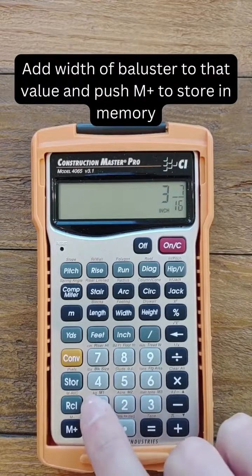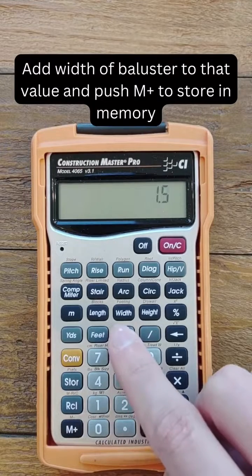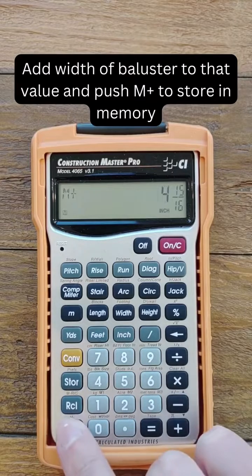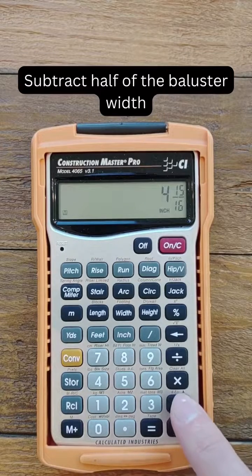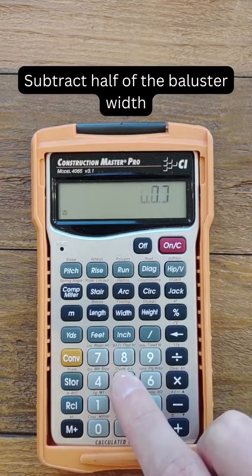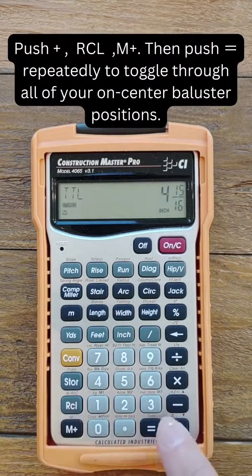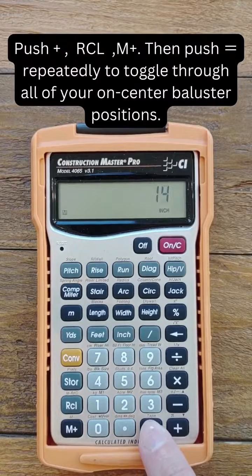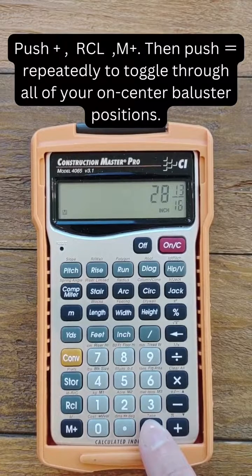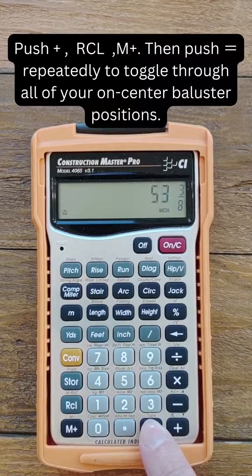We'll then add the width of baluster to that value and press M+ to store in memory. Then we subtract half of the baluster width and push plus, recall, M+. Now repeatedly hitting the equal button will toggle through all of the on-center baluster positions.